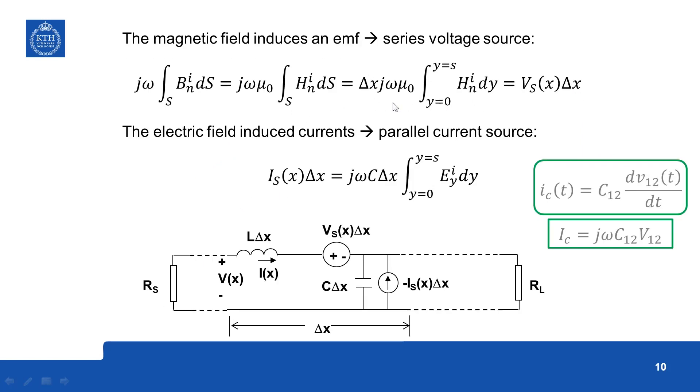Now ds is equal to delta x into delta y, delta y in this direction, so we are assuming that the field is not uniform here.